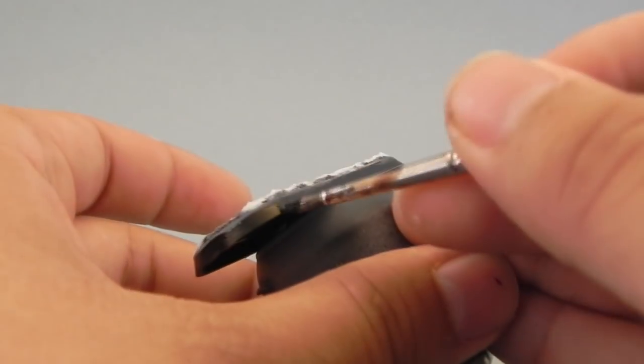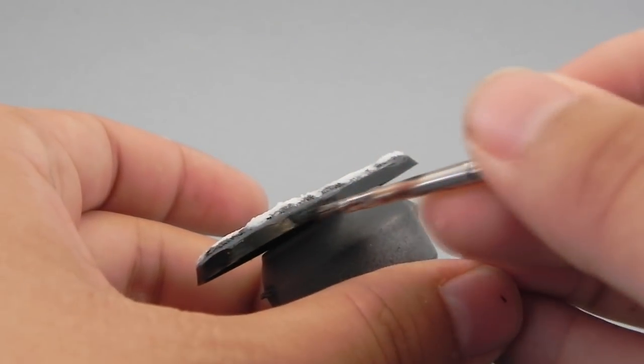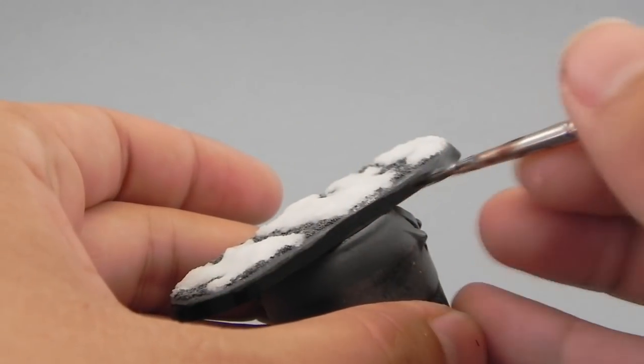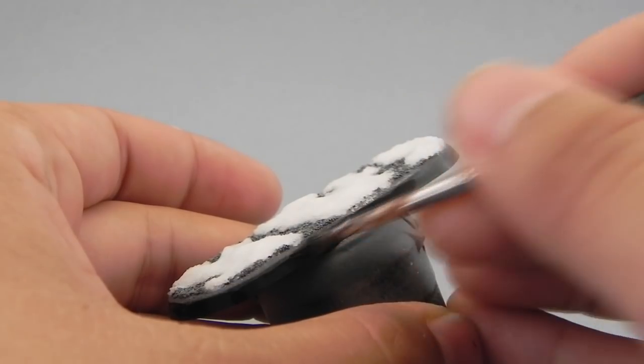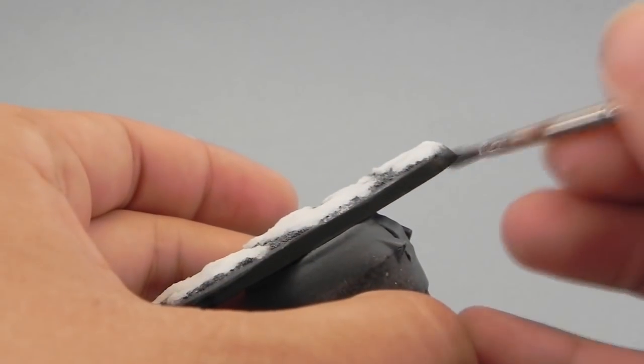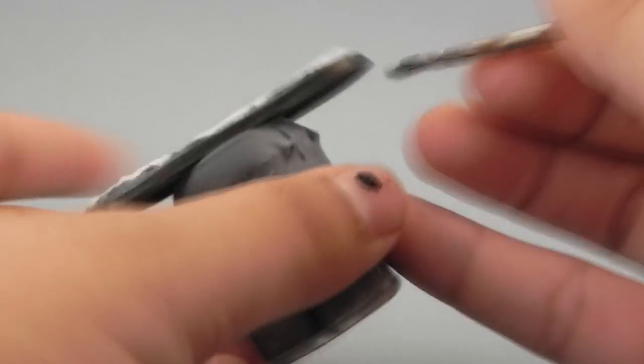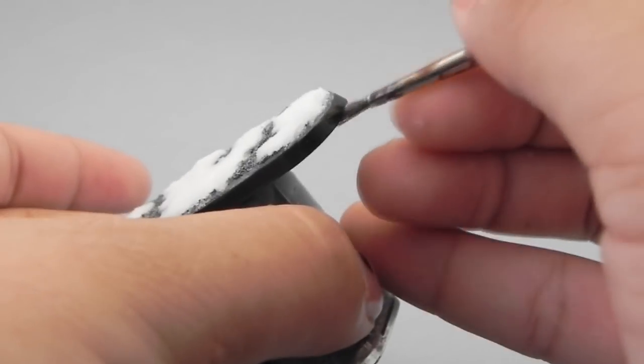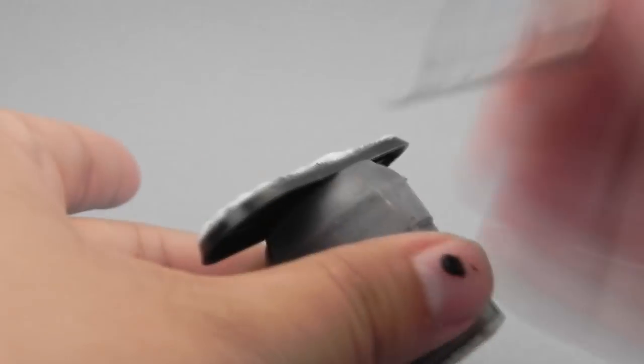And yeah, you just have to, of course I didn't talk about this because I thought it was very obvious, but you have to cover the whole area that you painted white with the snow. And if you go over the border a little bit, that's fine.